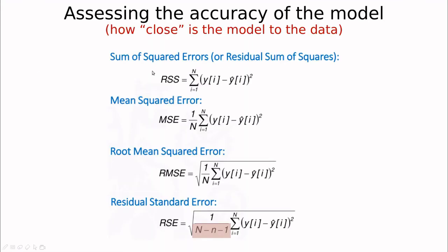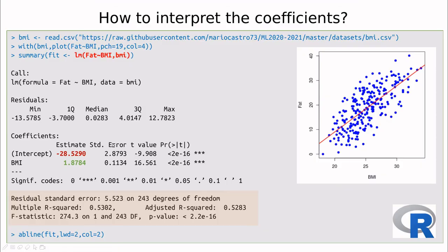So later we are going to relate RSS with this parameter that we've seen before, this R squared, which is a kind of summary of how good is our model. But let's stop it here.